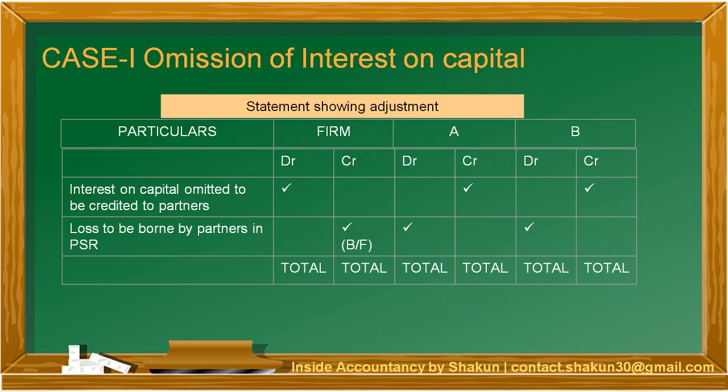Coming back to Case 1 — omission of interest on capital. If interest on capital is omitted from the books of accounts, it has to be given proper treatment. Interest on capital is an expense for the firm and it is given to the partners — it increases their capital account. Therefore, whatever interest on capital is to be provided is debited in the firm and credited to the partners. So interest on capital omitted to be credited to partners is debited in the firm being an expense and credited to the partners.